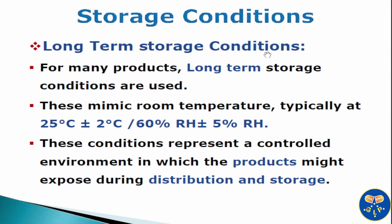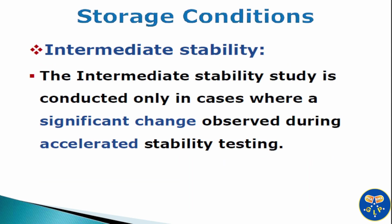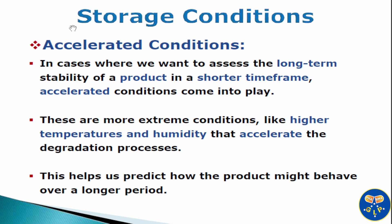For many products, long term storage conditions are used. These may mean room temperature, typically at 25°C ±2°C temperature and a relative humidity of 60% RH ±5% RH. This condition represents a controlled environment in which the product might be exposed during distribution and storage. The intermediate stability study is conducted only in cases where a significant change is observed during accelerated stability testing. In cases where we want to assess the long term stability of a product in a shorter time frame, accelerated conditions come into play. These are more extreme conditions like higher temperature and humidity that accelerate the degradation process.